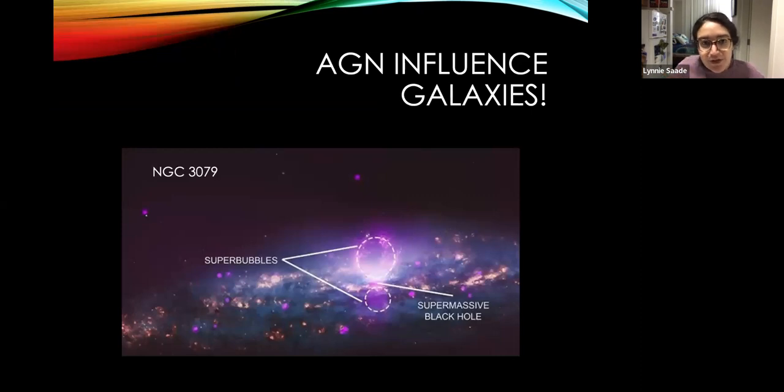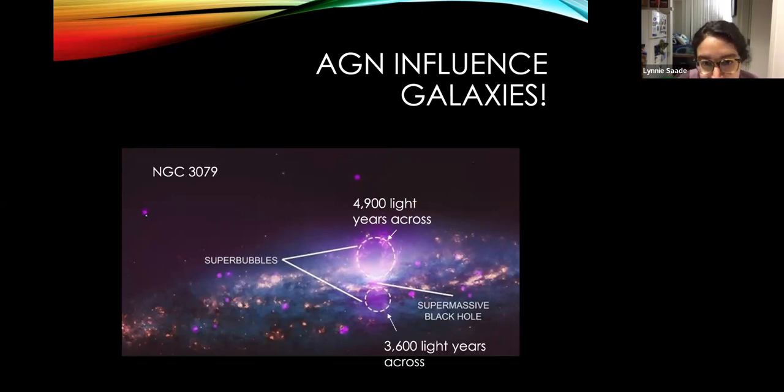But we can actually go out into the universe and look at different AGN and see how they're actually doing this. For instance, in the galaxy NGC 3079, there are two giant bubbles that are being blown into the galaxy by the supermassive black hole. The bigger one is 4,900 light years across and the smaller one is 3,600 light years across. So these are very large amounts of high energy gas that's being ejected out into the galaxy.